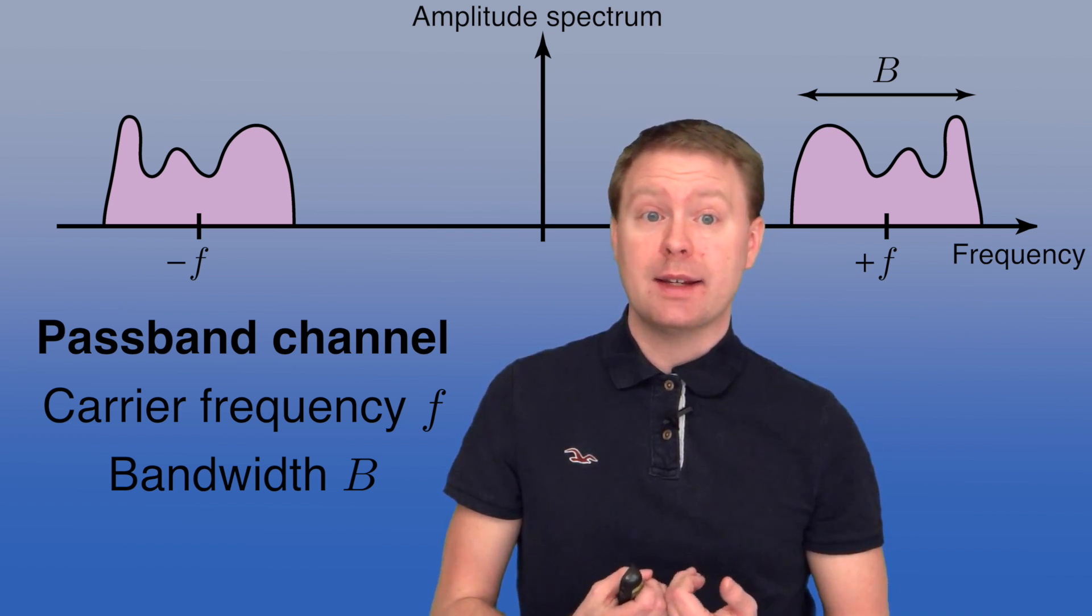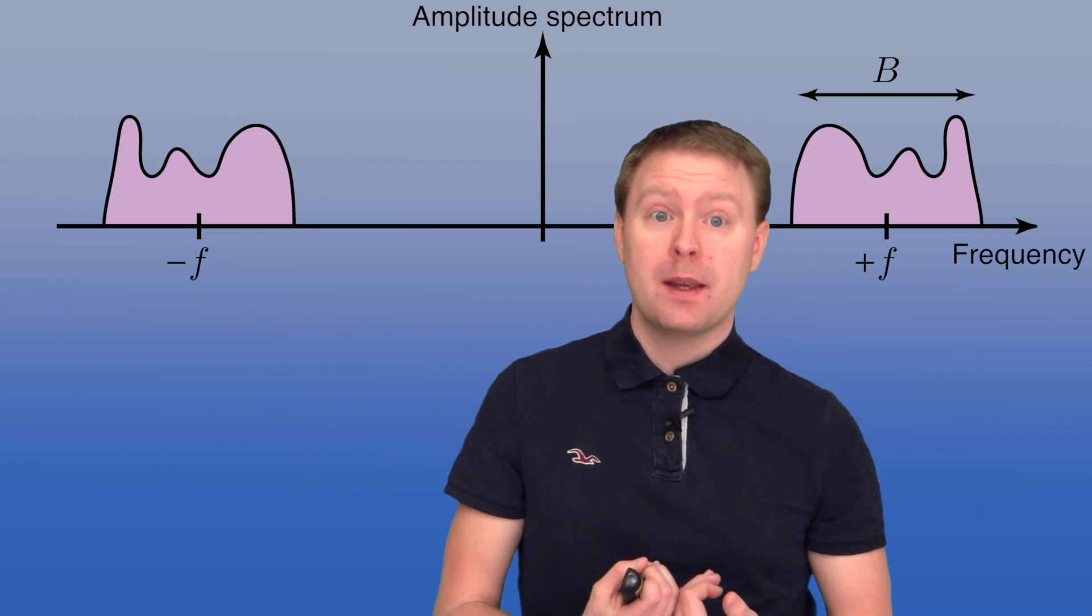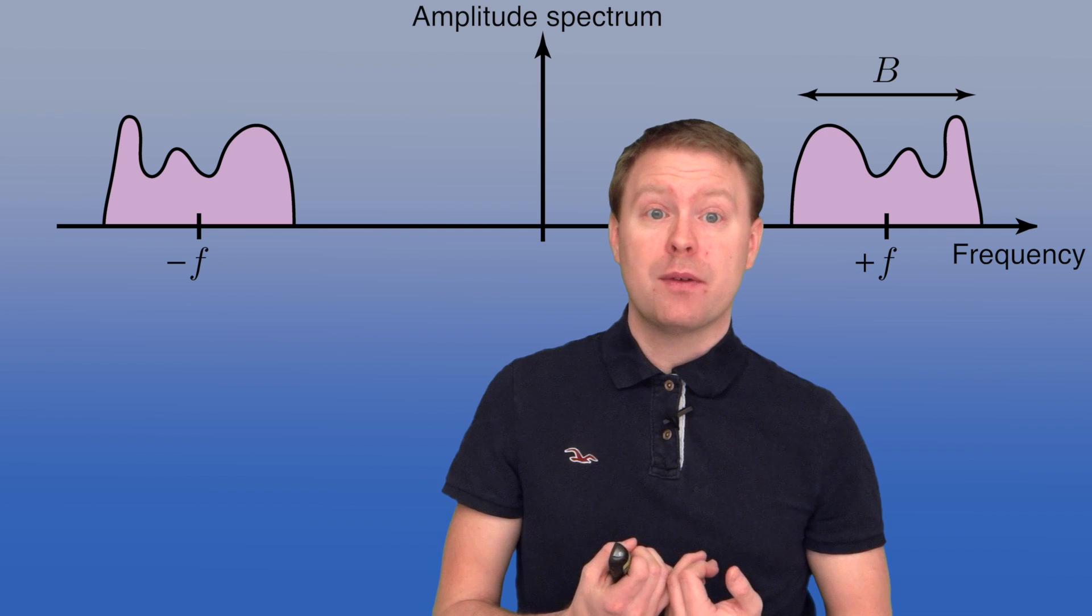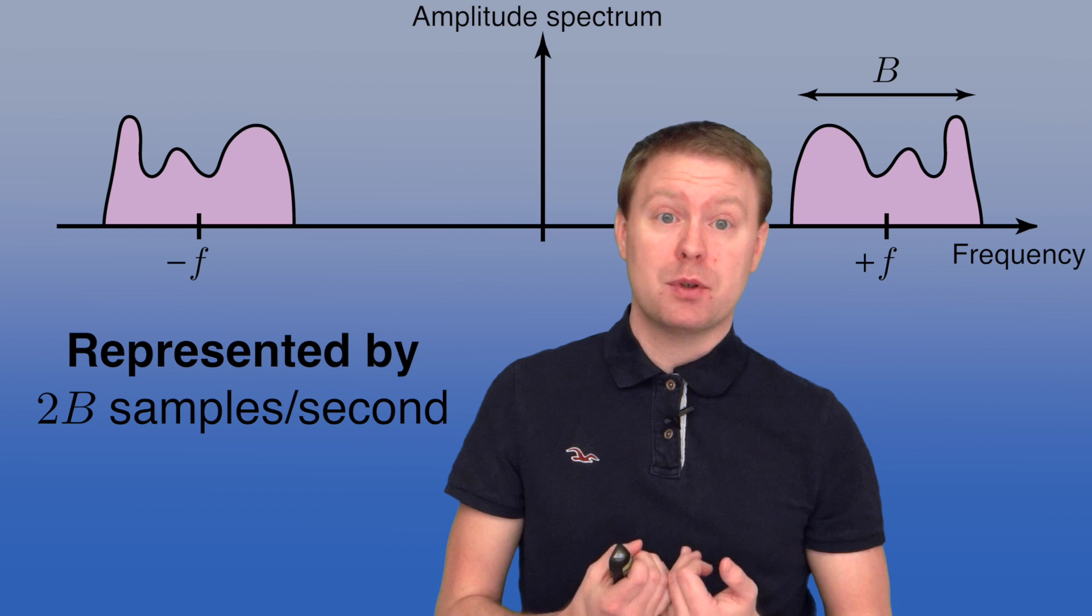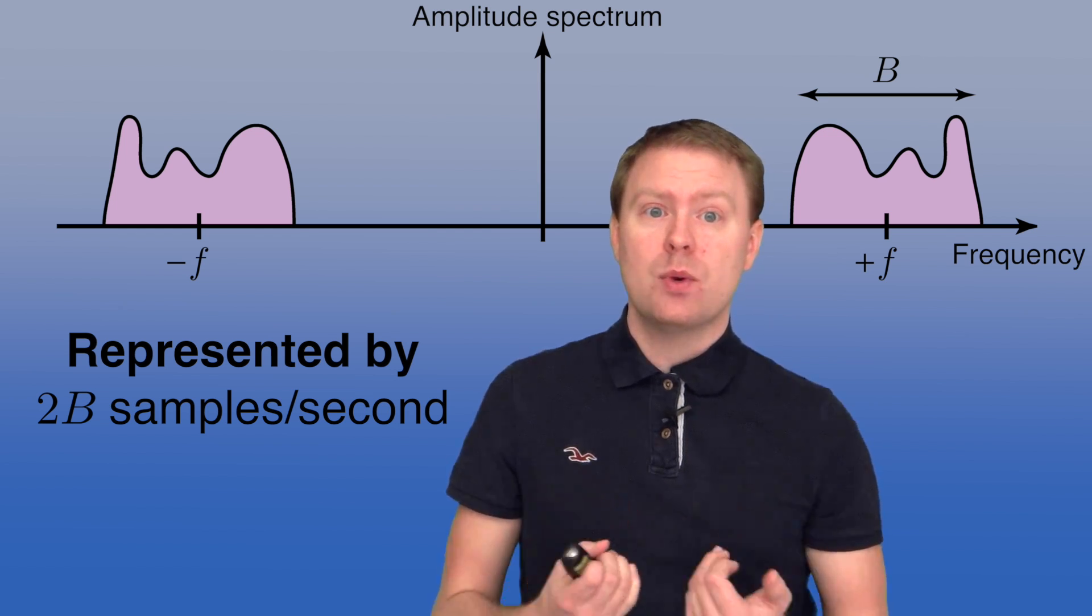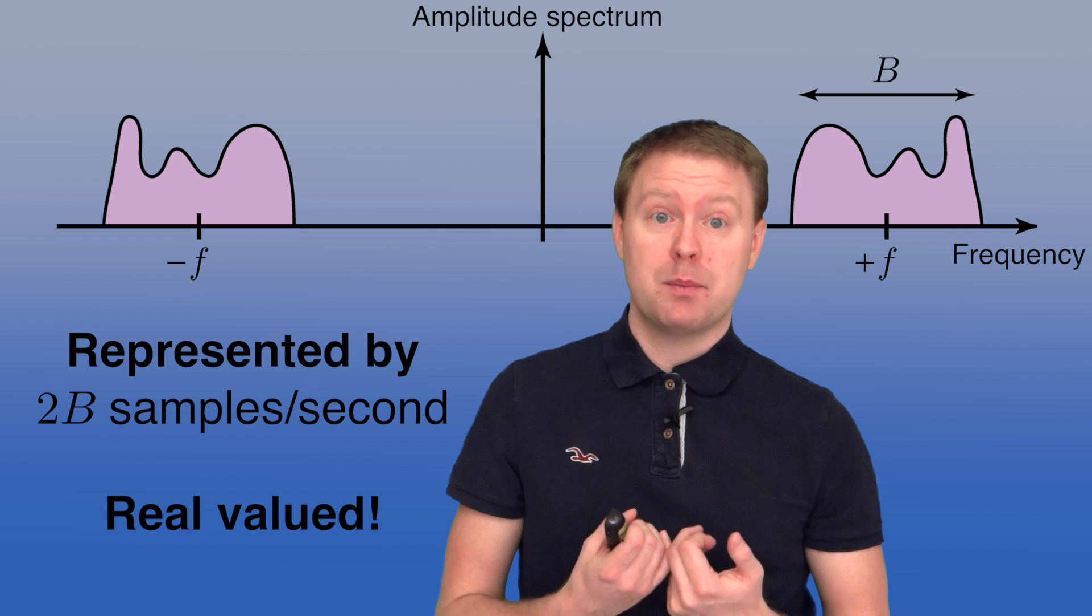For example we might communicate at the 3 gigahertz frequency with a bandwidth of 10 megahertz. When you have a bandwidth B, then you can represent the continuous time signal with 2B samples per second. The real signal will be real valued, so these are 2B real samples per second.